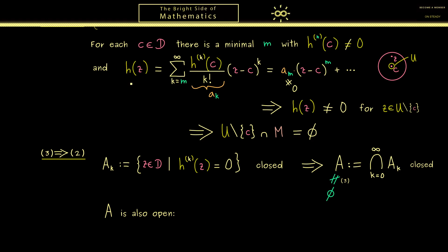Moreover, now we can also show that A is, besides being closed, also open. And you might already guess this works with our power series expansion again. Because now if we choose a point c in A, we know that the coefficients of our power series vanish. However, we know that this expansion works in the whole open disk around the expansion point. Therefore, if we choose a point in the disk, we know that also there all the derivatives will vanish — in other words the whole open disk lies also in the set A. And this is exactly how we defined the notion open at the beginning of the series.